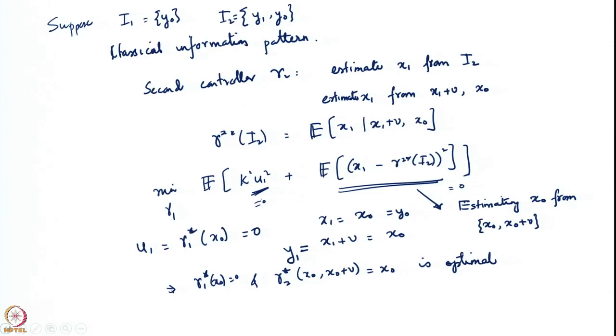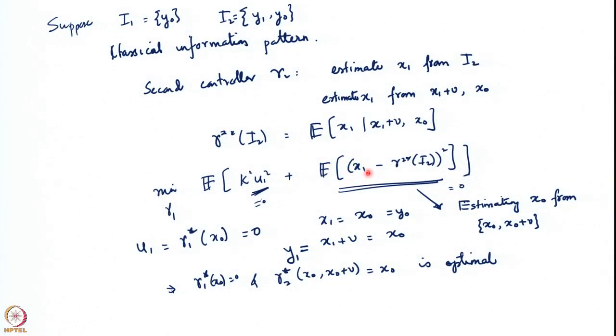Notice that because x0 was present here, when we were estimating x0 from x0+v, things became very simple. It was possible for the first controller to choose an action such that the second controller's job becomes extremely easy. He chooses his γ1 such that the second controller can estimate the next state x1 in a way that it can be estimated from x0.